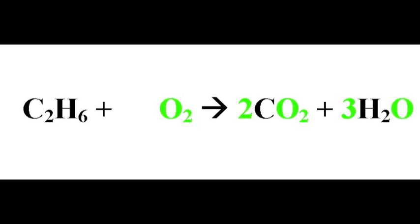The next is oxygen. There are two oxygen atoms on the left hand side. On the right hand side, there are two molecules of carbon dioxide each containing two oxygen atoms, providing a total of four oxygen atoms. There are three water molecules each containing one oxygen atom, for a total of three oxygen atoms from water. So on the right hand side, carbon dioxide and water together give a total of seven oxygen atoms. That's two on the left and seven on the right. A mathematician would want to put three and a half as the balancing number in front of oxygen to bring seven oxygen atoms on the left and seven on the right.